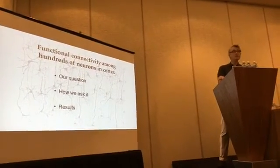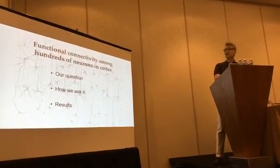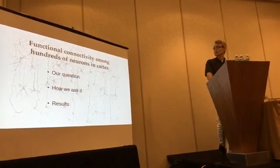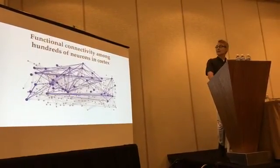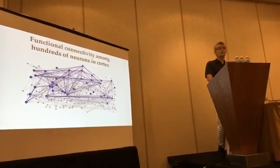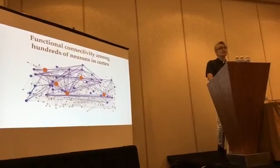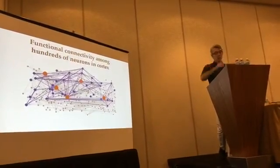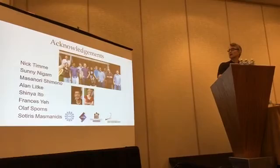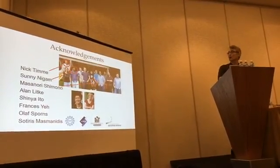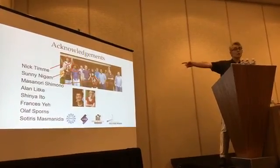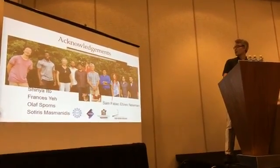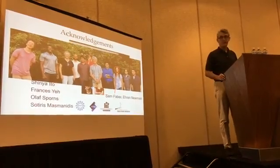So here's what we talked about. Our question: can we map with arrows the information flow in these networks? Can we find spots where it collides? We asked this using high-temporal-resolution recordings of large numbers of neurons. Our main results are that most of the information flow is controlled by a small number of neurons, and the spots where synergy occurs are often collision points where high out-degree neurons converge. I'd like to thank members of my lab — Nick Timmy, Sonny Nigam, Masanori Shimono, Sam Faber, and Aaron Newman — and our funding agencies. Thank you.